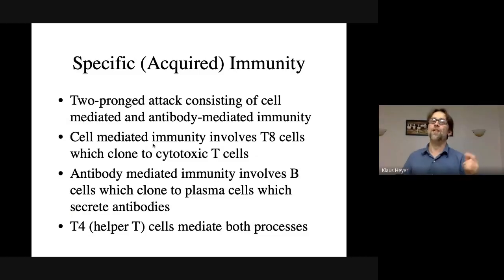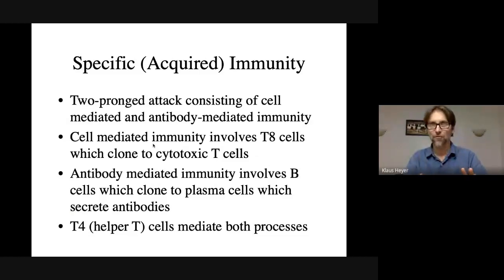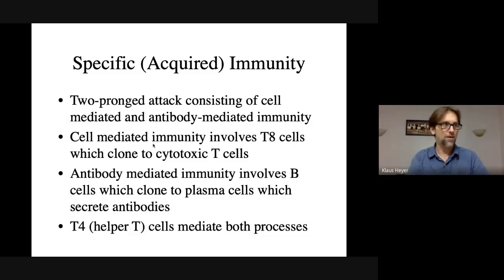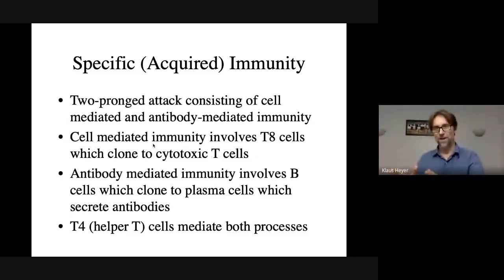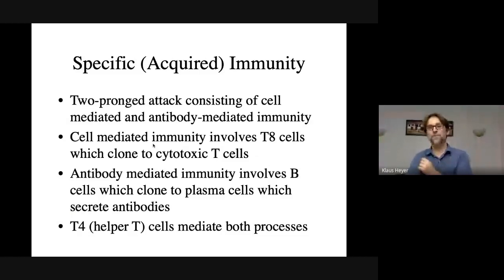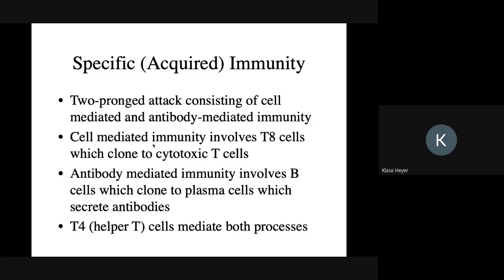Specific immunity goes after one specific pathogen — an army is built. General immunity is like police: good at going after lots of different things but only on a small scale. When an army invades you can't send police after them — you have to send your army after their army. But our army is only good at attacking one army, so if another army invades you have to train a whole other set of troops. They're really good at going after large numbers of things but only particular things, whereas general immunity can go after lots of different things but in very small numbers.